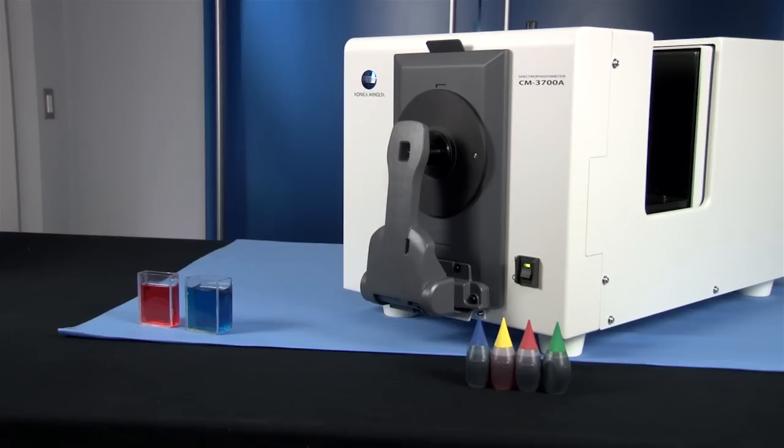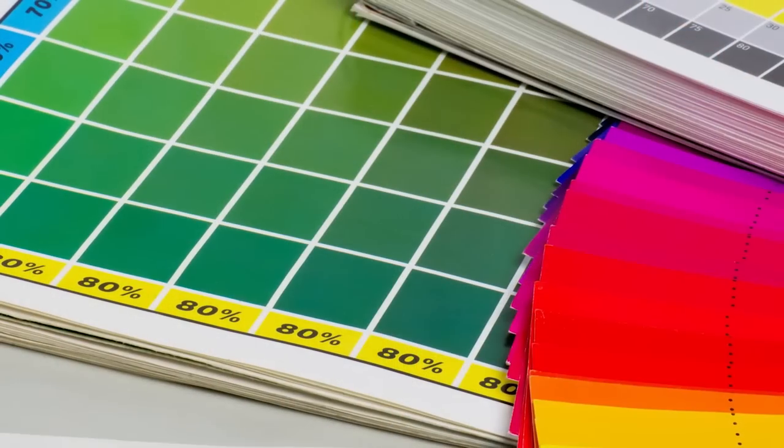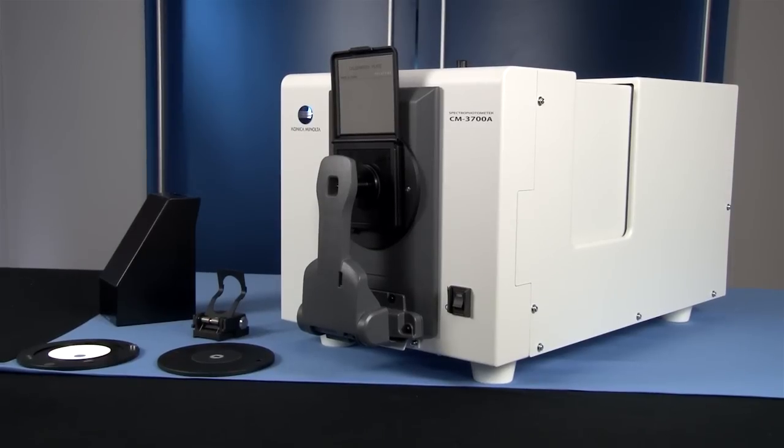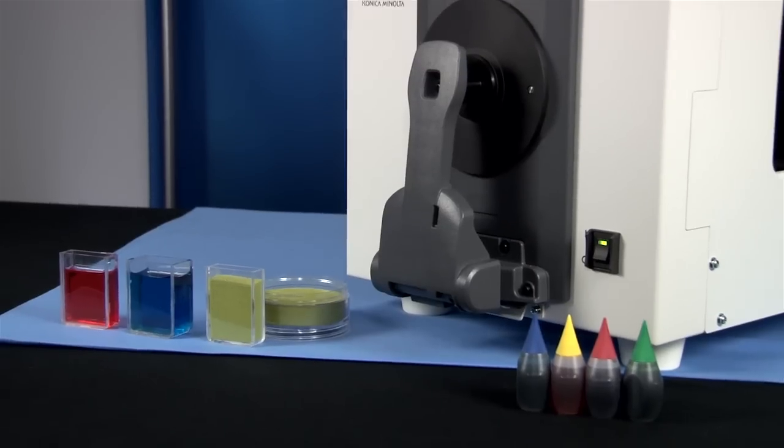The CM3700A is designed for color formulation, analysis, and quality control inspections within research and manufacturing environments. This versatile spectrophotometer precisely measures the color and appearance of a wide range of samples.